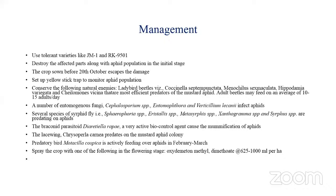For management, use tolerant varieties like JM1 or RK9501. Destroy affected plants. Sow during October to avoid the conducive January season. Install yellow sticky traps to monitor aphid population. Conserve natural enemies. Spray entomopathogenic fungi like Cephalosporium, Entomophthora, or Verticillium lecanii. Conserve syrphid predators and braconid parasitoids like Diaeretiella rapae, which is a very active biological control agent.